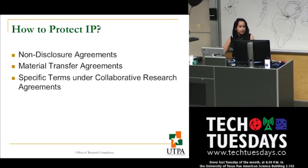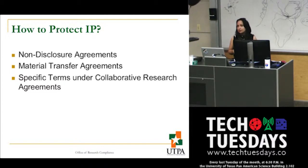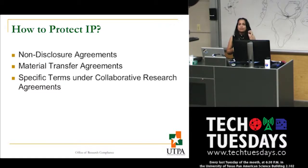There are several ways to protect your IP. One is through legal binding agreements. There are confidentiality agreements, also called non-disclosure agreements; material transfer agreements; and collaborative agreements that contain specific clauses protecting your disclosure, invention, or discovery before it is permanently protected through a patent, trademark, or copyright.